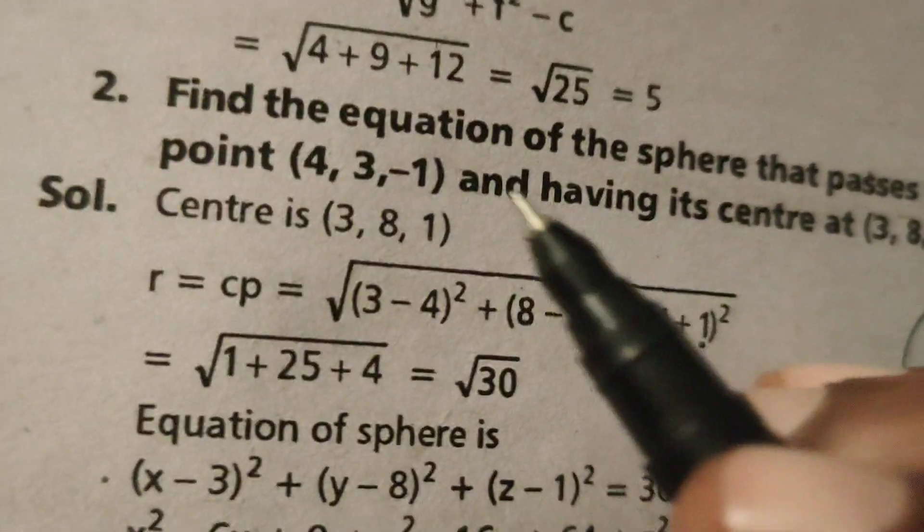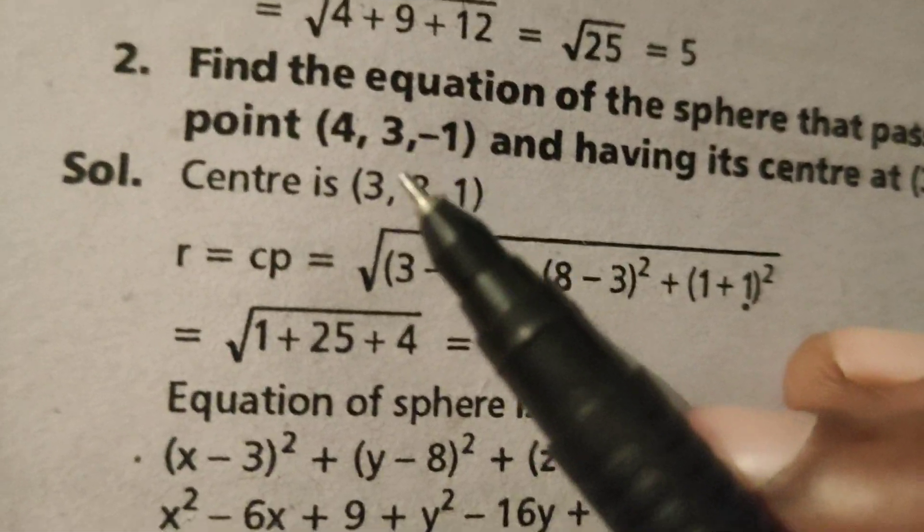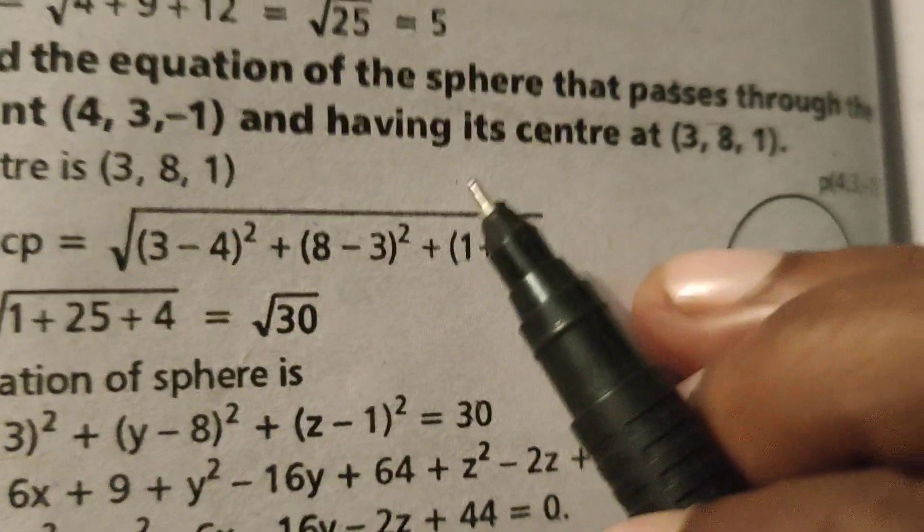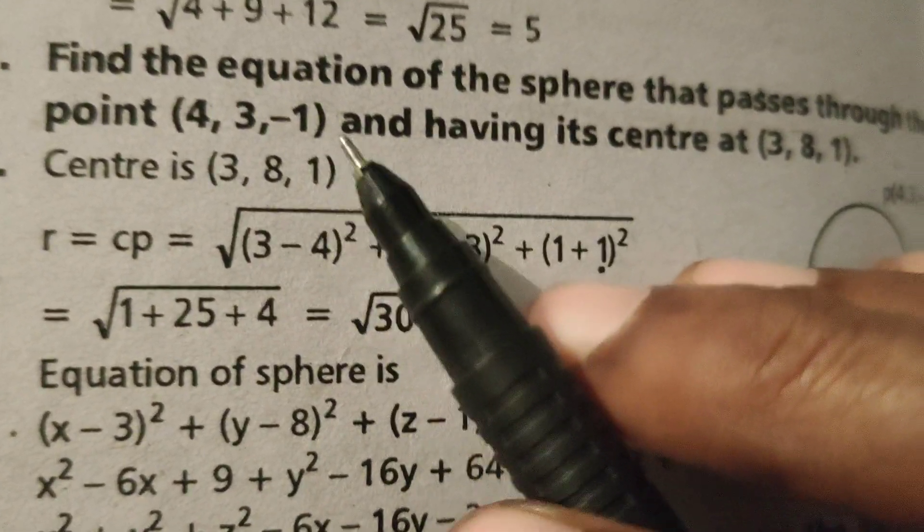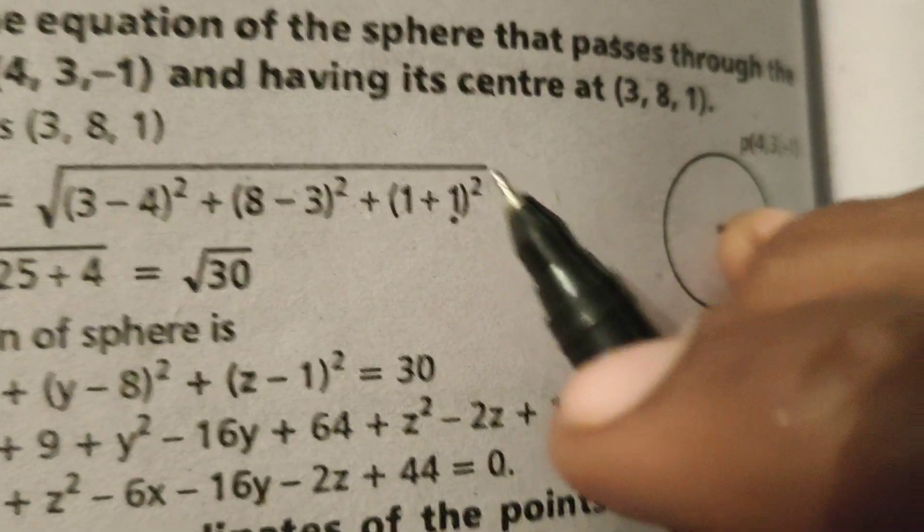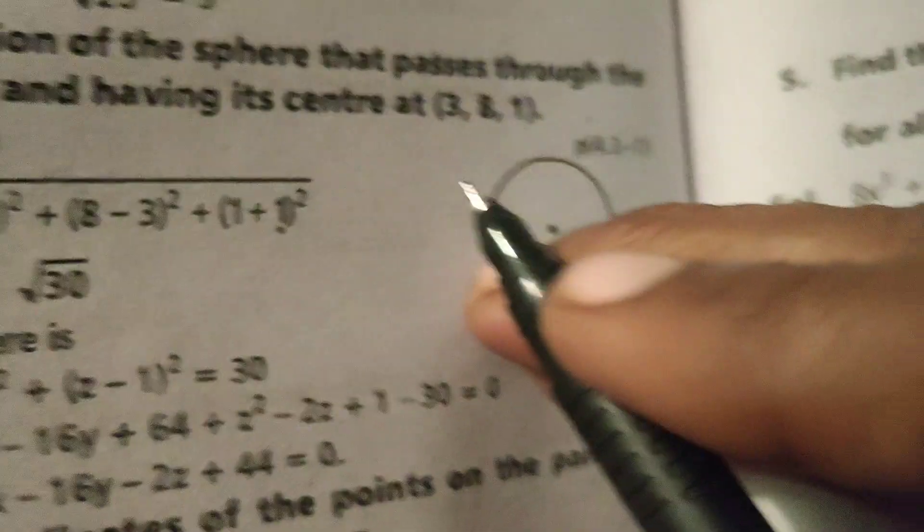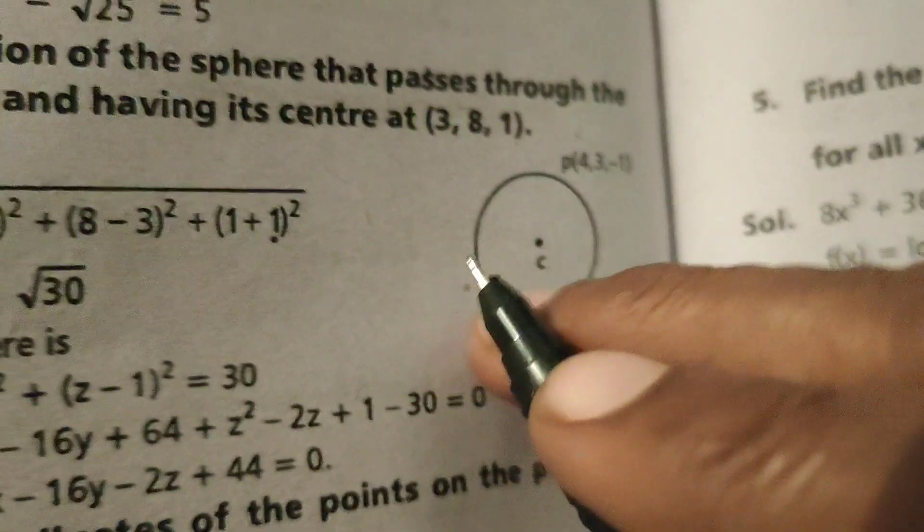Hi everyone, this is Dr. Yuthi. Now today we are going to find the equation of the sphere passing through the point (4, 3, -1) and having its center at (3, 8, 1).